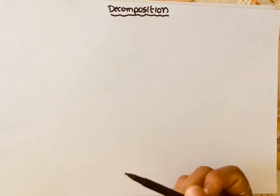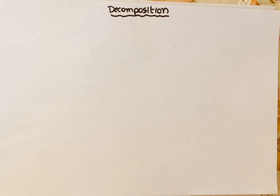Hi learners, welcome. In this video I'm going to explain the third type of chemical reaction related to stoichiometry — that is decomposition reaction. Decomposition reaction means when a single compound undergoes dissociation into two or more products.